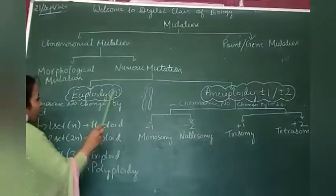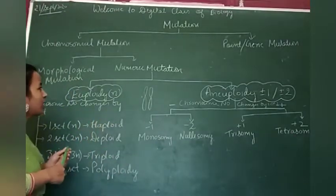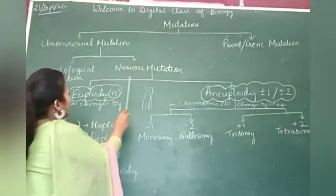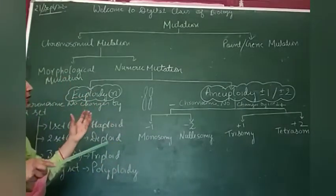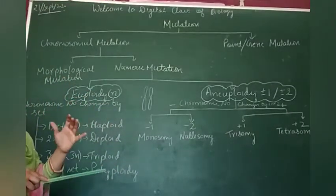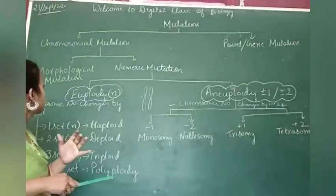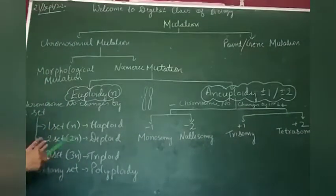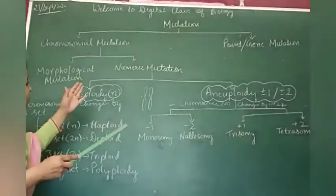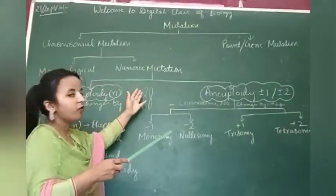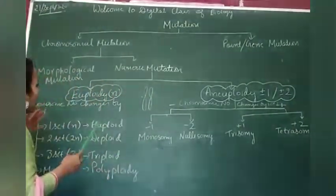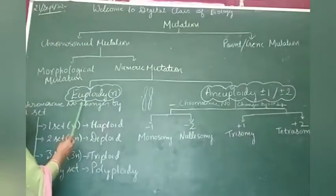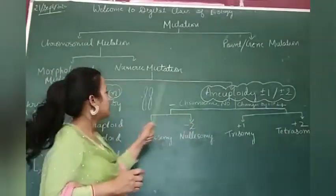Now today we will study about numeric mutation. Students, as the name suggests, it means we are talking about number of chromosomes. Here we are not talking about genes, but about number of chromosomes. This is of two types: euploidy and aneuploidy.